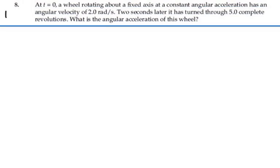Here's problem 10.8. At t equals zero, a wheel rotating about a fixed axis at a constant angular acceleration has an angular velocity of two radians per second. Two seconds later, it's turned through five complete revolutions. What is the angular acceleration of this wheel? All right,